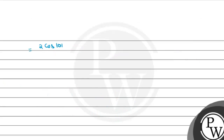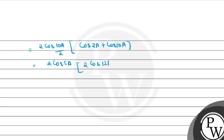After solving this, we have 2·cos5a. Then we again apply the formula — cos A plus cos B — and we get 2·cos(12a/2) into cos(8a/2), which simplifies further.